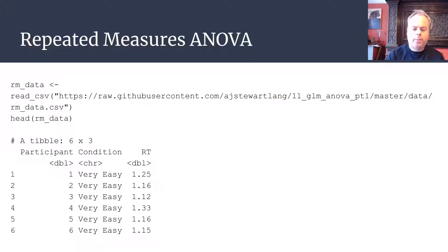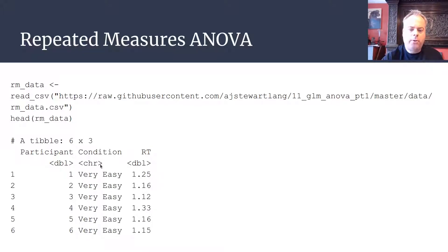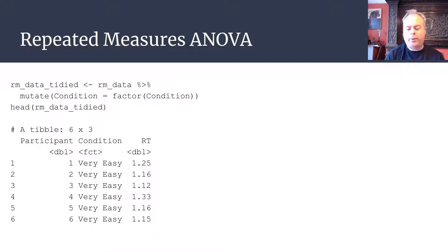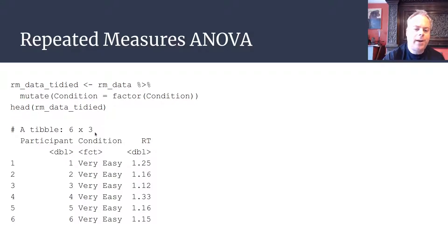We're going to read the data in from GitHub. When we inspect the first six rows using the head function, we have the same issue as in the first video — the condition variable is not yet coded as a factor, so we need to do something about that. It's important that the data accurately reflects the experimental design. We'll use mutate to convert condition to a factor, and after inspecting the tidied data frame we can confirm it's now appropriately coded.